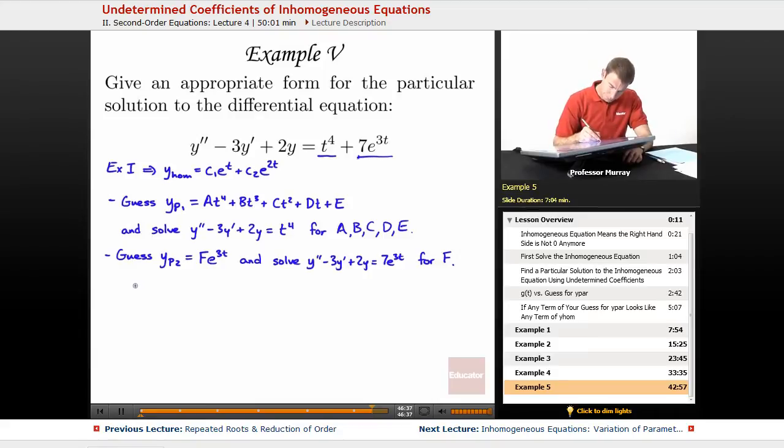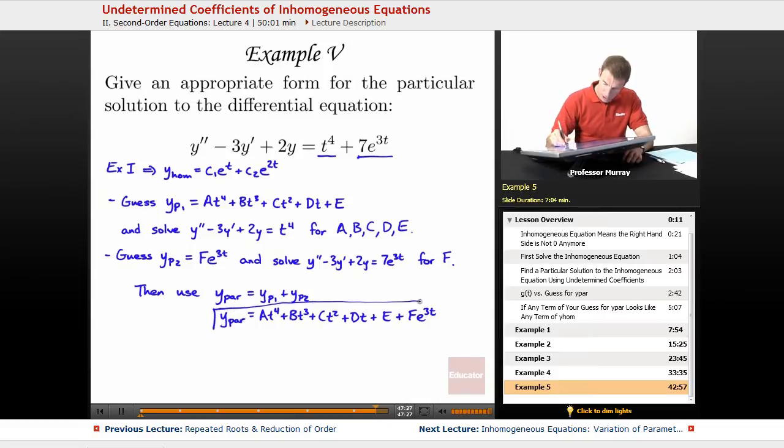And then, once we found all those coefficients A, B, C, D, E, and F, we would use our y particular. We would just add those two solutions. So, yp1 + yp2. Or, once we'd found those coefficients, A*t^4 + B*t^3 + C*t^2 + D*t + E + F*e^(3t). That would be our final particular solution.